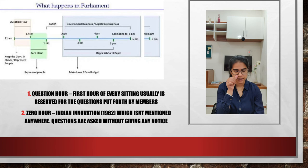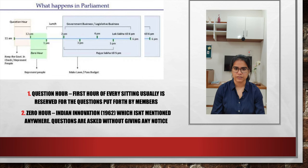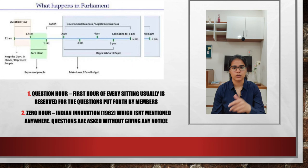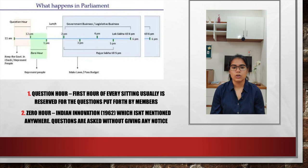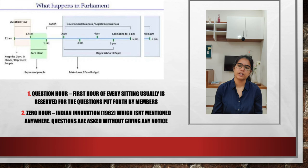You can see the diagram to understand how parliament basically works. Now we must discuss question hour and zero hour. The first hour of every sitting is usually the question hour, unless otherwise decided by the presiding officer - for example, on August 5th 2019, when the J&K Reorganization Bill under Article 3 was introduced. In question hour, members give notice and then ask questions. There are 4 types of questions. Sufficient notice means 10 days or 21 days.